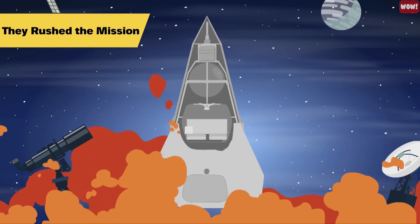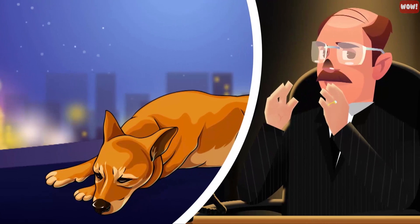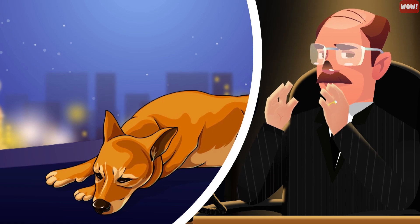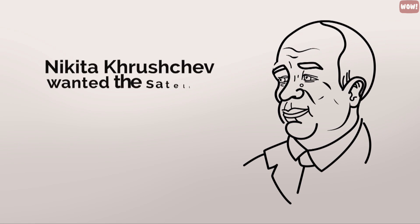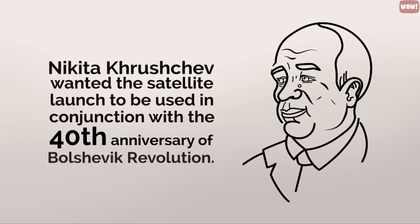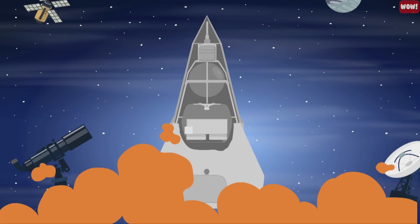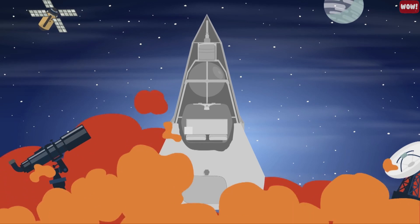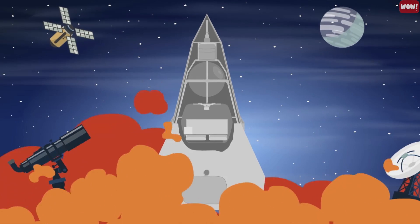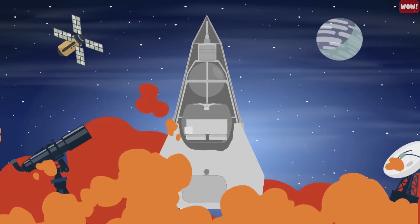Number 3: They rushed the mission. The original plan had Laika coming home, and the Soviets even told press outlets that she would be comfortable, would have everything she needed to survive, and would return home safely. Sadly, the original plan was changed, as Nikita Khrushchev wanted the satellite launch to be used in conjunction with the 40th anniversary of the Bolshevik Revolution. To put it bluntly, the entire Sputnik 2 launch was used as a propaganda piece, and in order for the satellite to be ready in time, it was to be rushed.